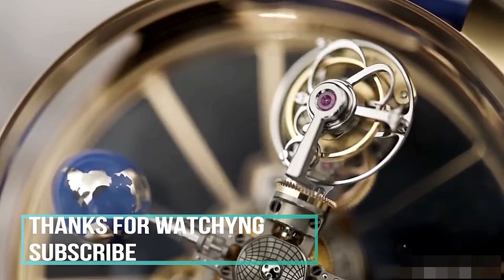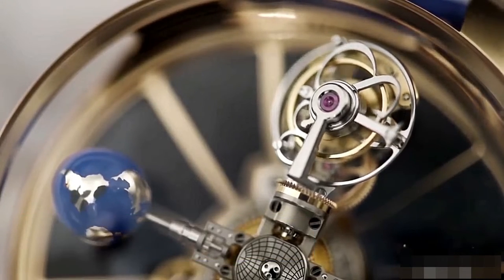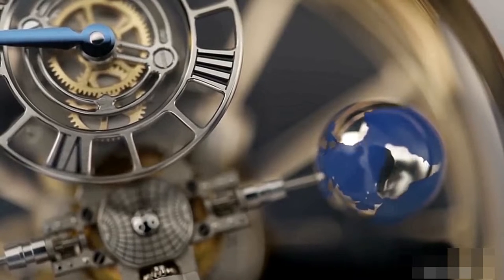The second satellite features the tourbillon spinning consistently within its cage every minute, while the third satellite hosts a hand-painted globe.